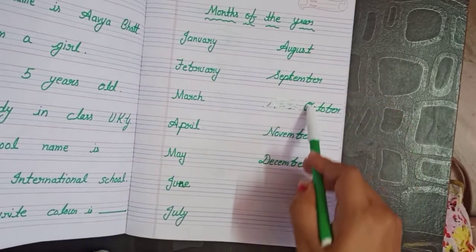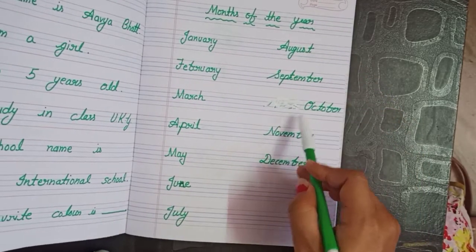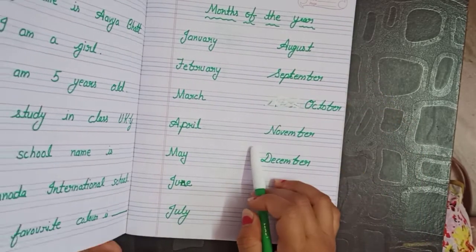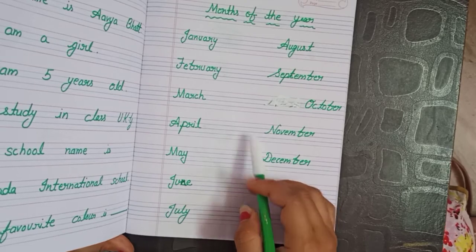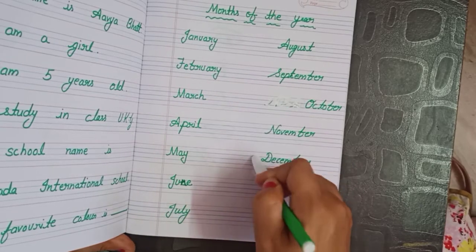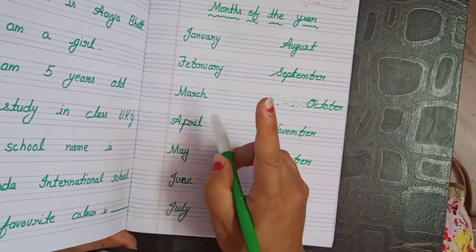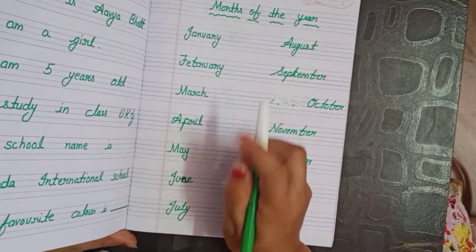You have to learn it and pronounce properly. Months of the year — there are twelve months in a year.